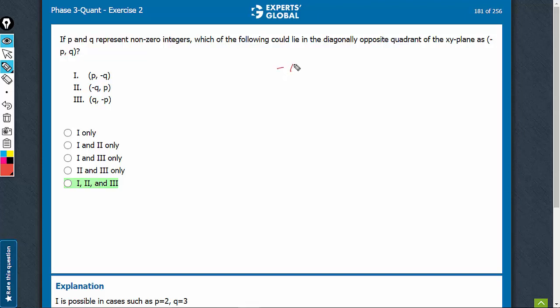We have (p,q) as one coordinate. Which of these could lie in diagonally opposite quadrants? Imagine. This is, of course, possible.